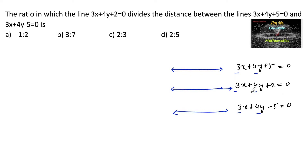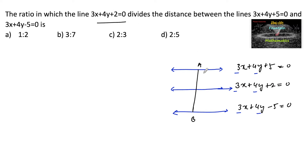So the line 3x + 4y + 2 = 0 is dividing the distance between the lines 3x + 4y + 5 = 0 and 3x + 4y - 5 = 0. AB is the distance between these two parallel lines, and the line 3x + 4y + 2 = 0 is dividing it in some ratio.